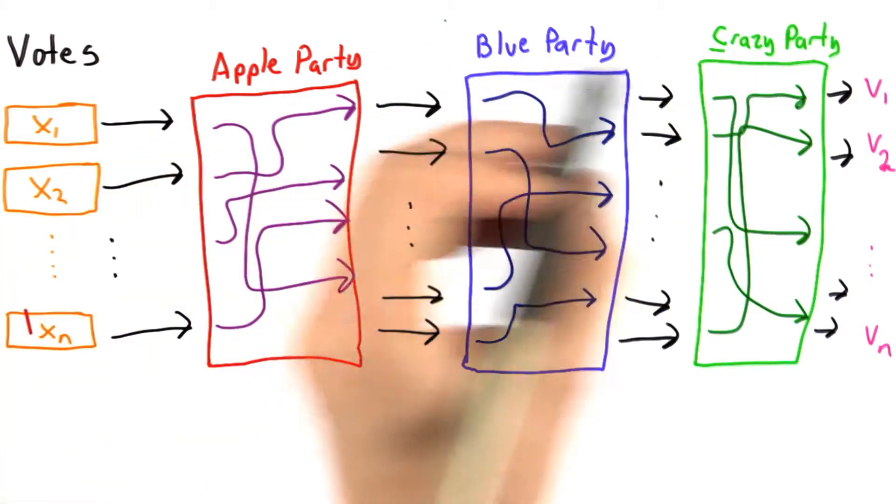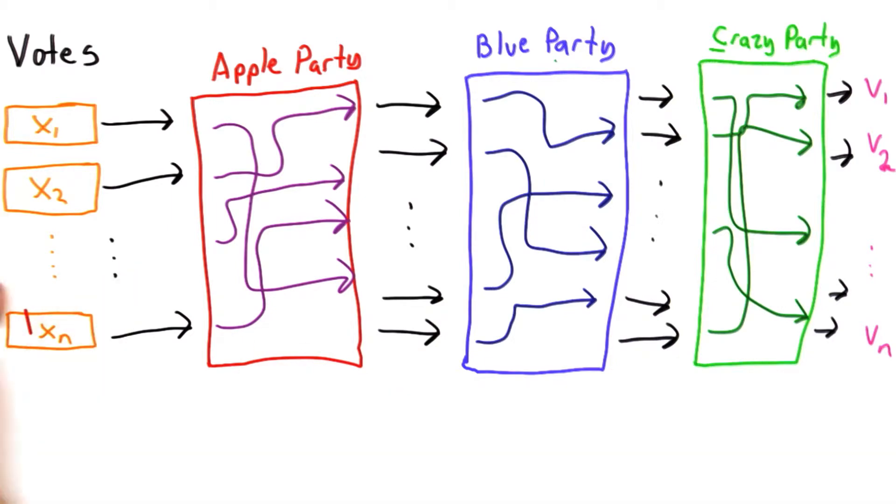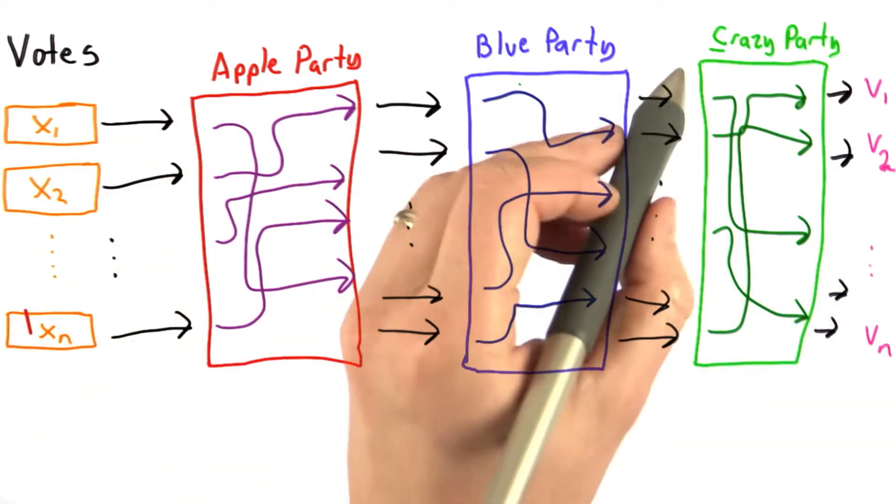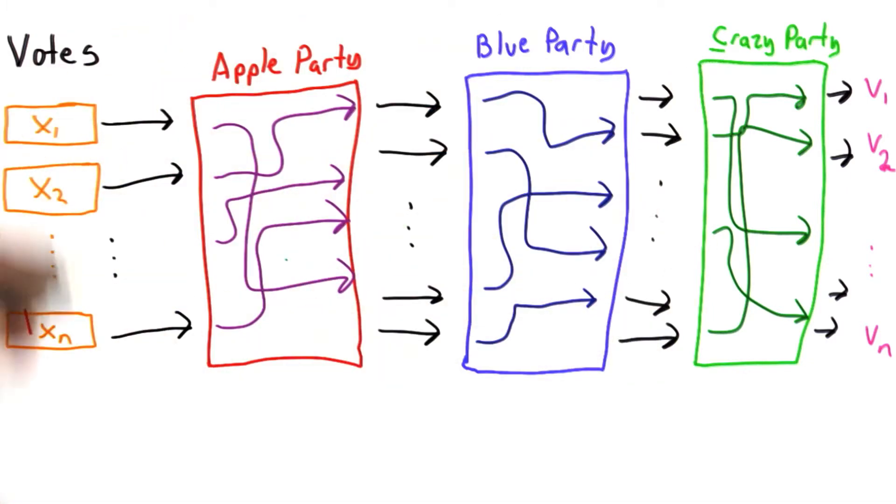And our security assumption is that the apple, the blue, and the crazy party all hate each other, that they wouldn't possibly collude, so they can be trusted not to collude with the other parties. But otherwise, they can't be trusted. They want to try to change the election, change the votes, do everything they can.